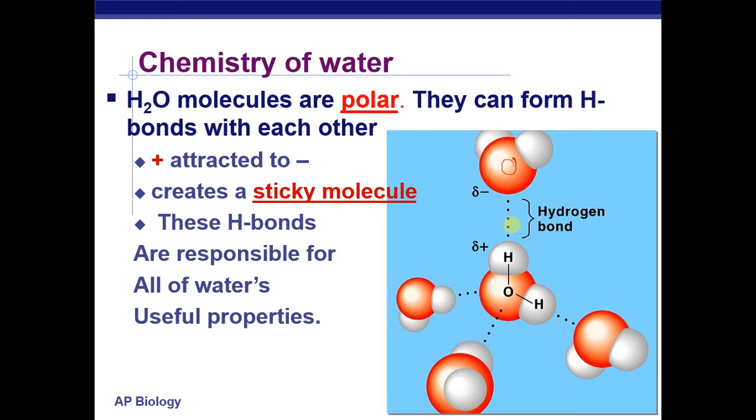They allow those molecules of water to be sticky, to stick together through those hydrogen bonds, and they're responsible—those hydrogen bonds are for all water's useful properties. So we're going to talk about a number of properties today. They all come back to being founded or grounded in water's hydrogen bonds, which arise because it is a small polar molecule. You can see from this picture how water molecules can be oriented to form multiple hydrogen bonds with multiple other water molecules.